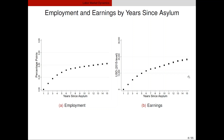Over their 15 years of stay, refugees increased their employment probability by 40 percentage points, but most of the gain happens in the first five to six years. They also increase their real wage earnings by about $20,000 in 2015 PPP, and again, a large part of this increase happens in the first five to six years.